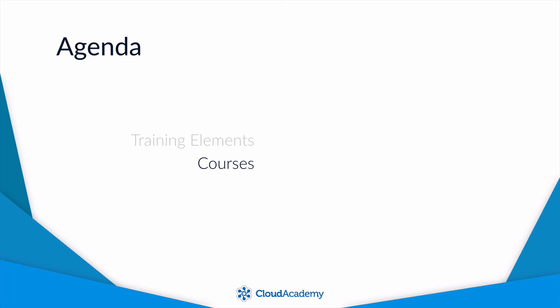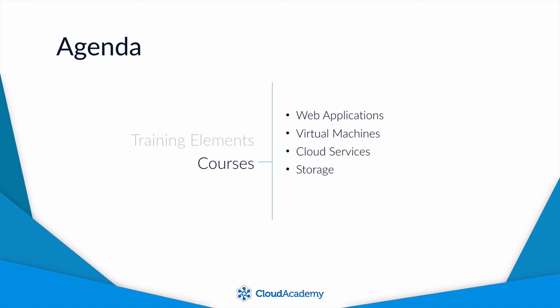Let's now discuss the main areas of the exam, which we'll cover through this learning path. There are five key areas divided into individual courses: Web Applications, a managed service designed to easily host web-enabled applications; Virtual Machines, which allow easy provisioning and management of virtual machines; Cloud Services, a flexible managed service to host your .NET background services; Storage, which allows cheap, rapid, and flexible storage in the cloud; and Cloud applications and network services, which offer managed networking, security, and messaging services. Each course runs for between one and two hours and will cover everything you need to prepare for the exam.